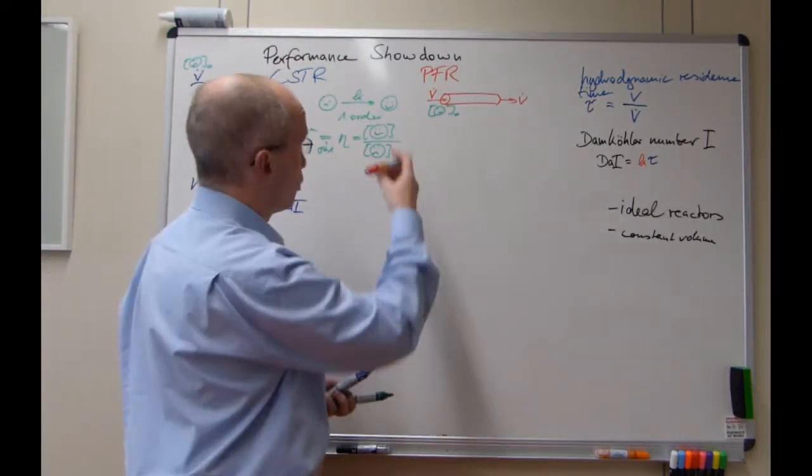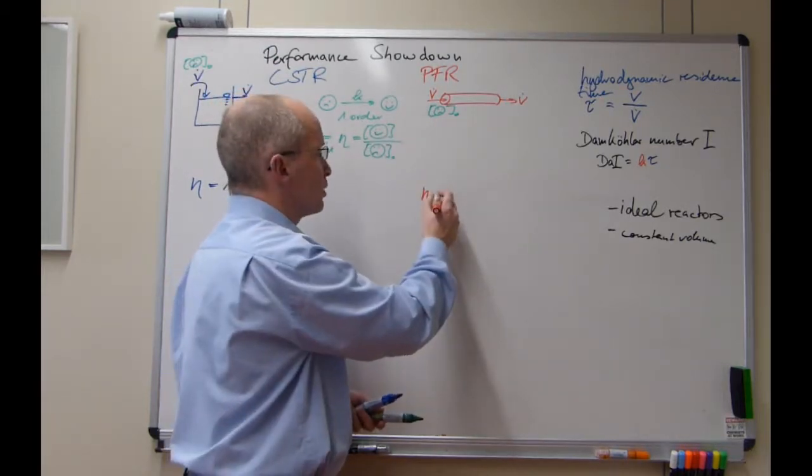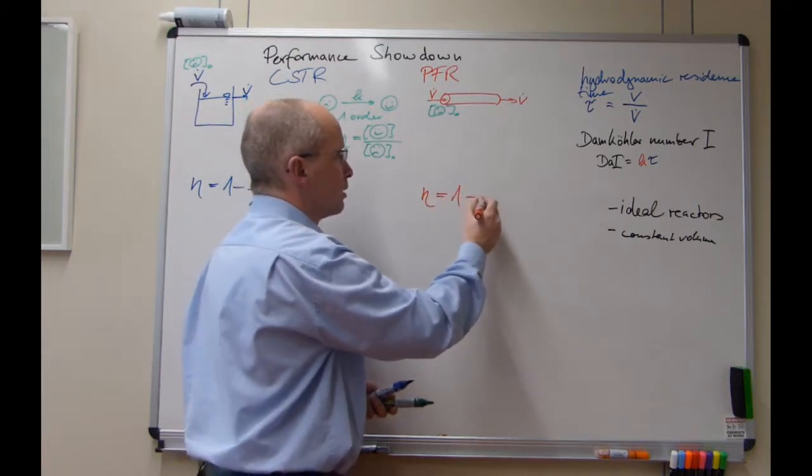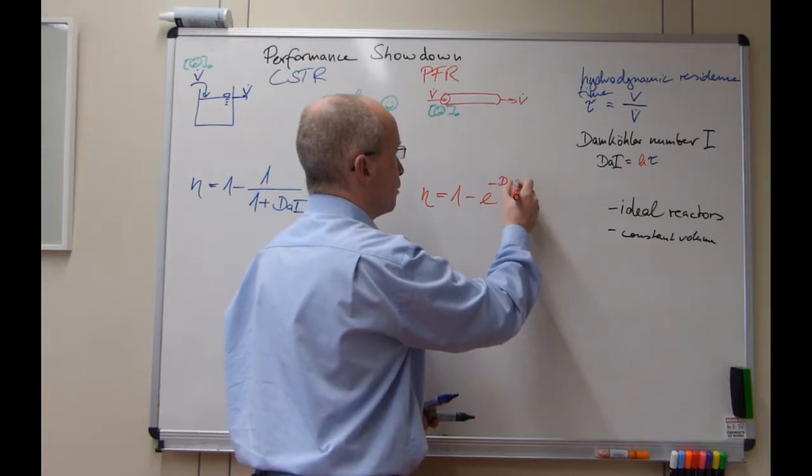And performance for the plug-flow reactor, yield, looking at happy students here, is given by 1 minus e to the power of minus the Damköhler number.